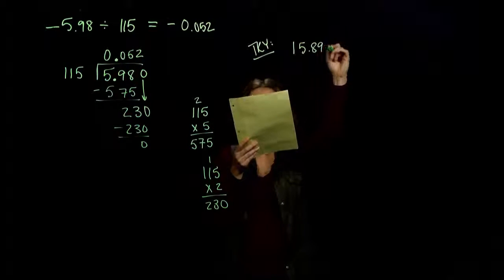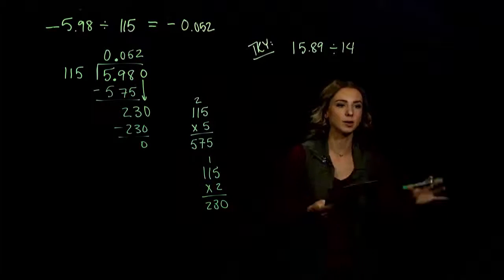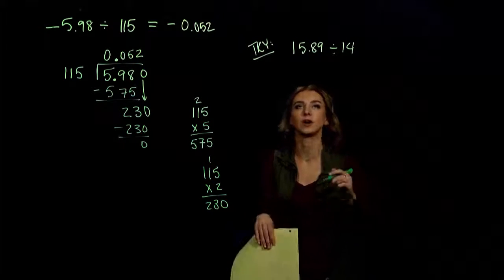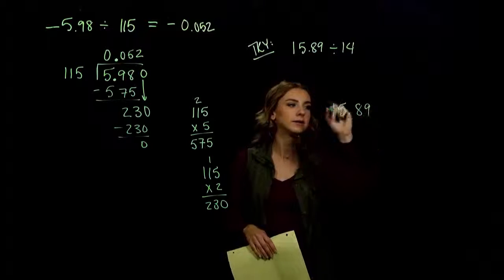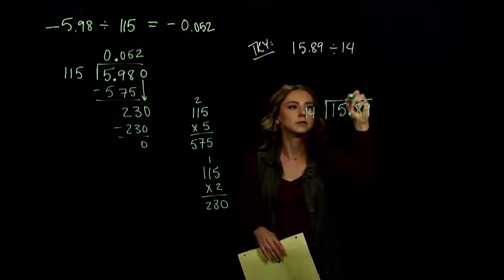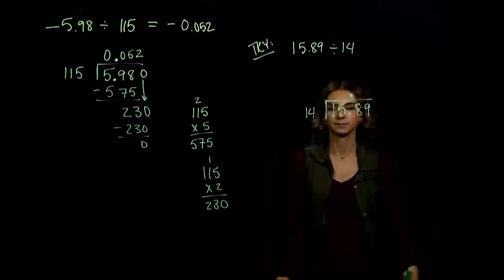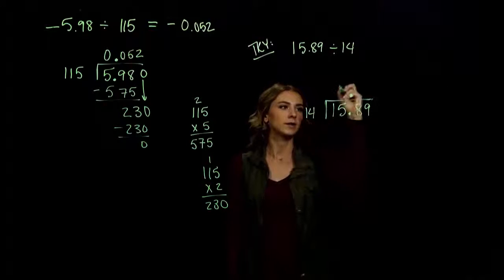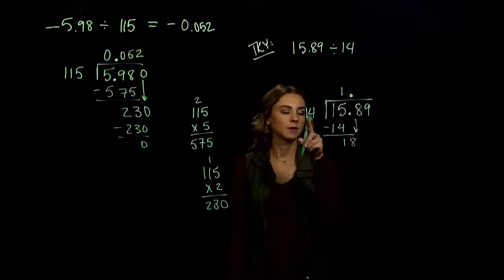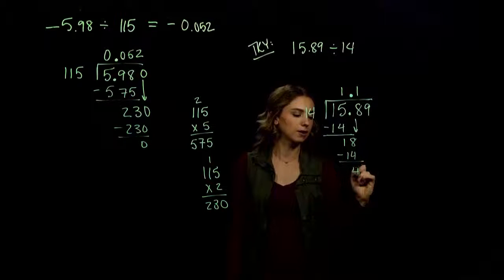Here's one for you to try — pause the video and try the division. Take 15.89 and divide it by 14. You'll probably have to write off some multiples on the side. So 15.89 goes on the inside of our long division, 14 is on the outside. Make note of where the decimal is. 14 into 1 doesn't fit. 14 into 15 goes once, difference of 1, bringing down what's next. 14 goes into 18 once without going over, 18 minus 14 is a difference of 4.